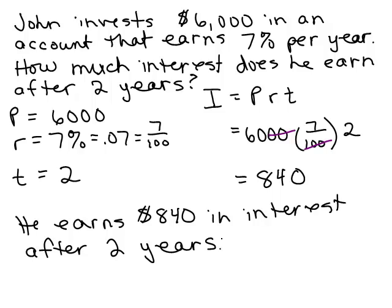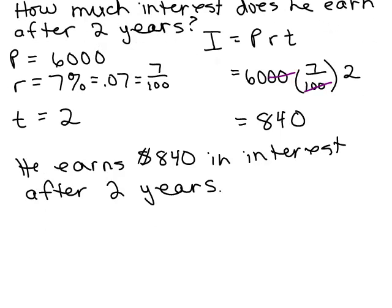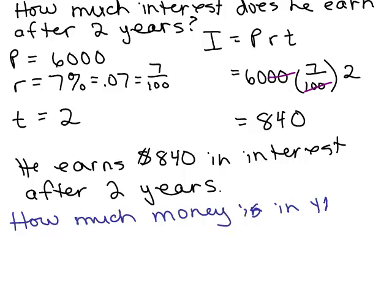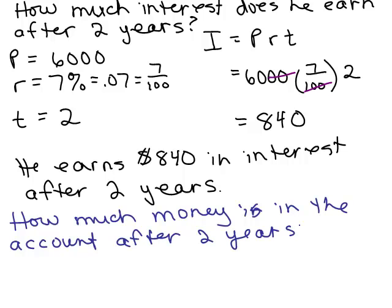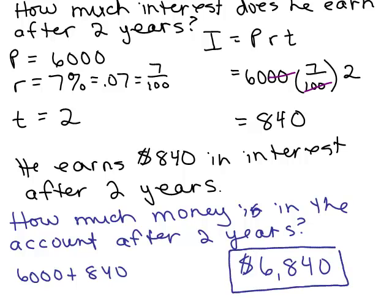Now the question may have been different — it may have said how much money is in the bank after two years. The idea is that the interest is added to the account: he originally had $6,000 and now has $840 more because of the interest. So we take 6,000 plus 840, and our answer is $6,840 is now how much money he has in the account.